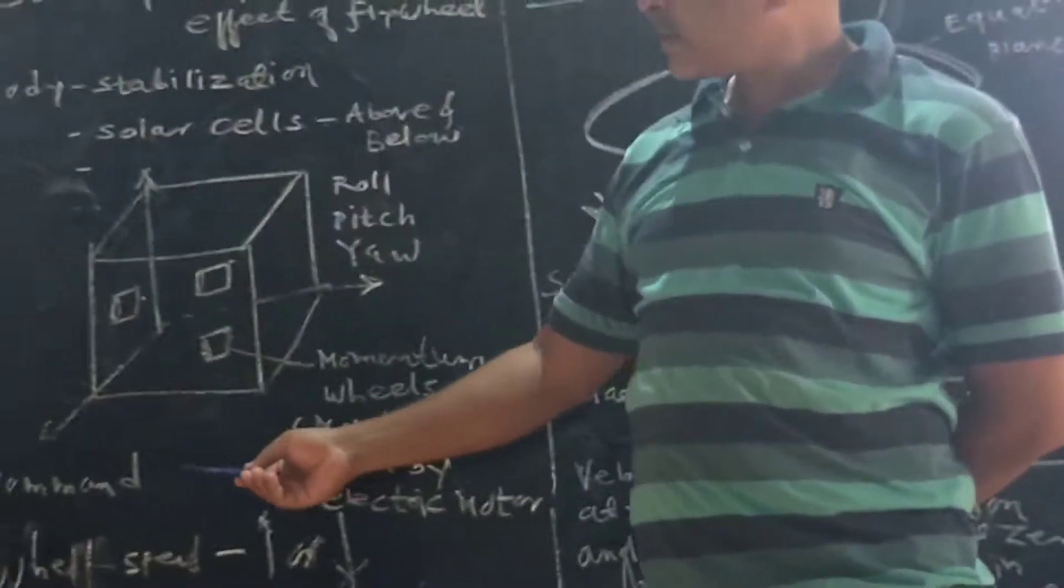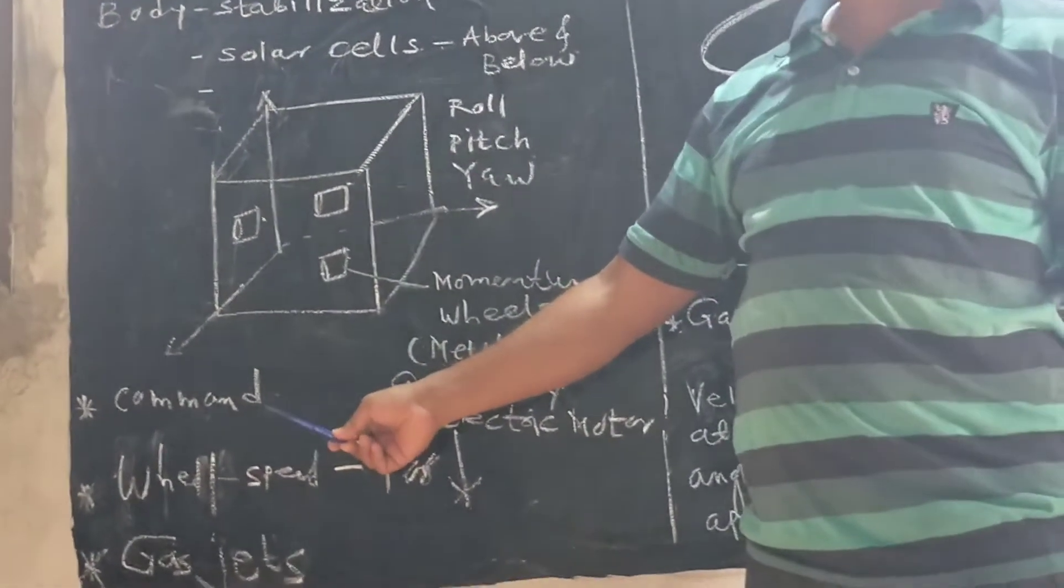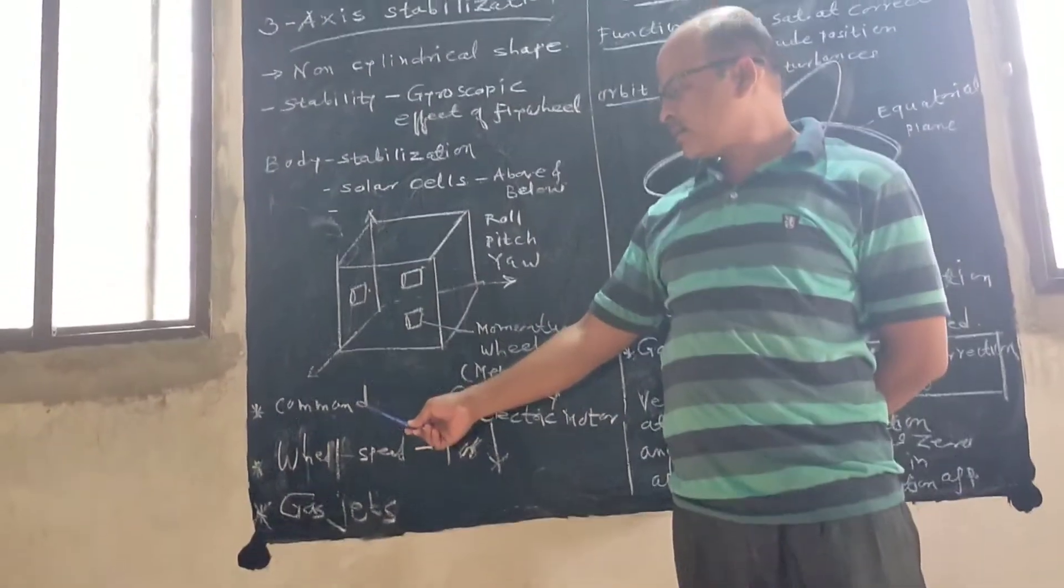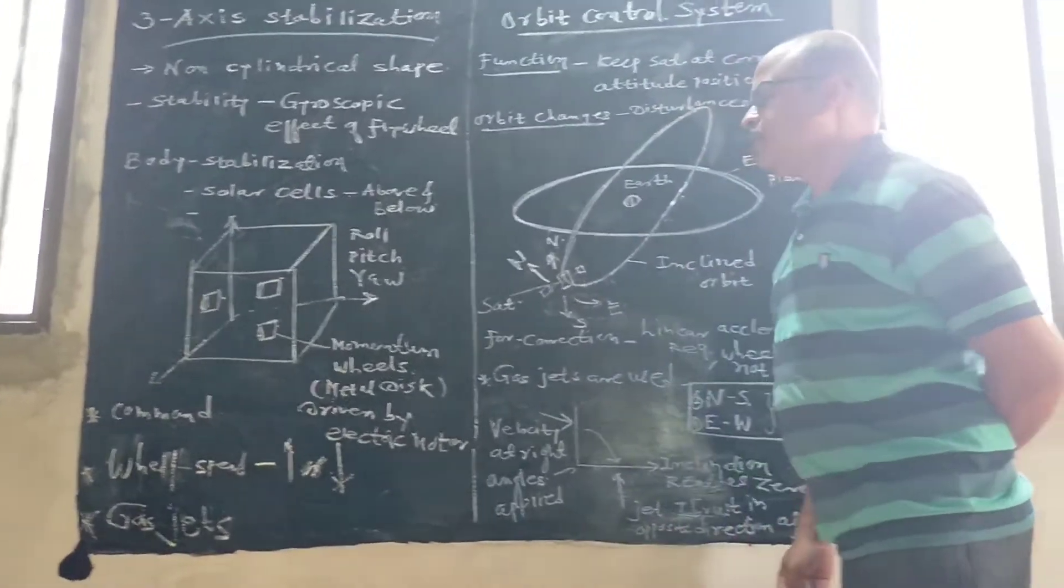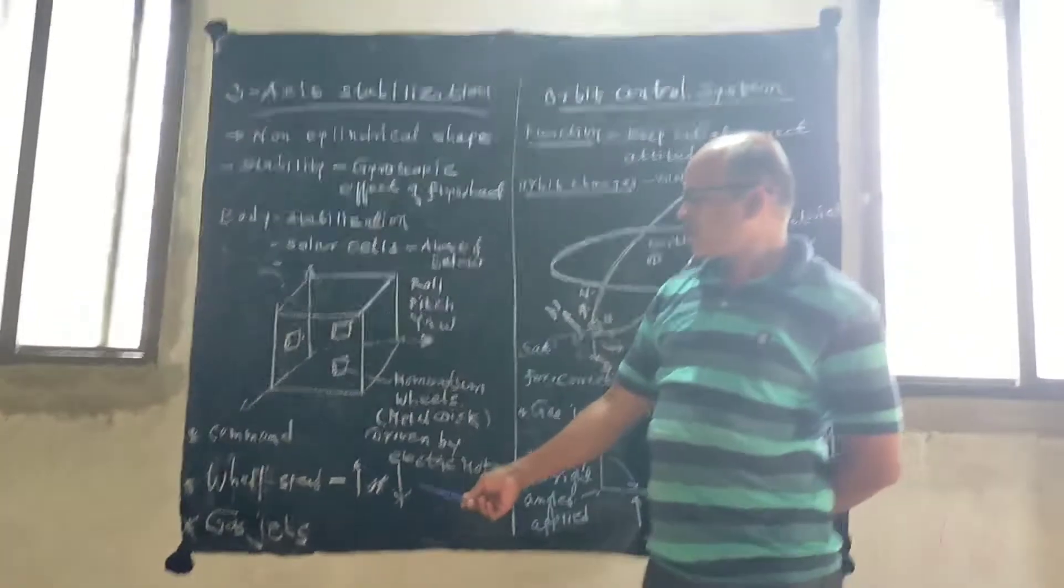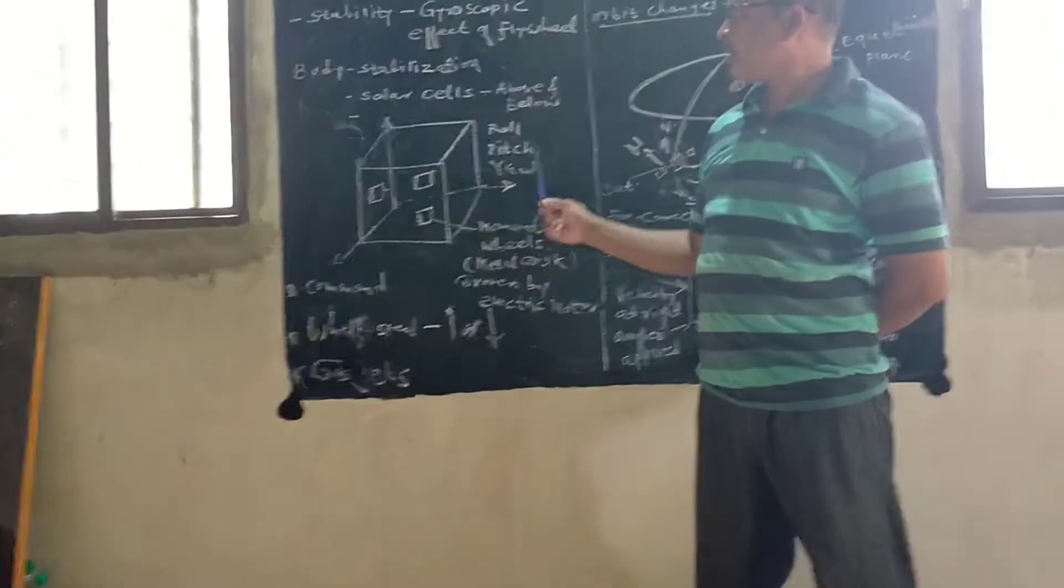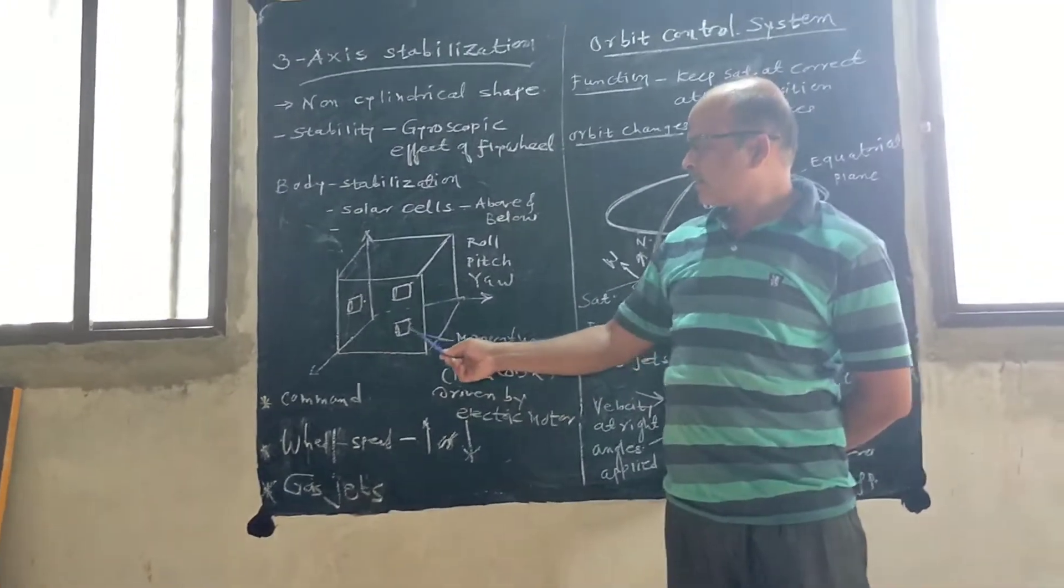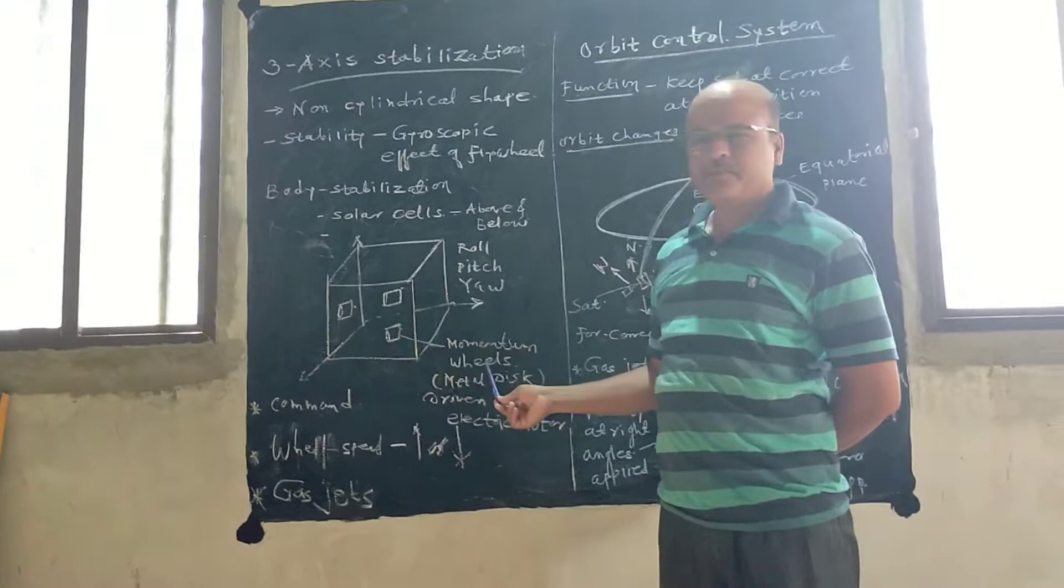Then, in some cases, satellite stabilization is provided through the command given by through the earth station. And generally, speed of that wheel is increased or decreased by using the gas jets. So, this is three-axis stabilization with the help of momentum wheels.